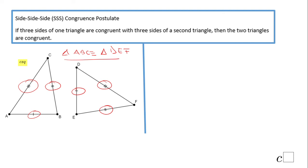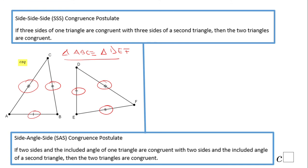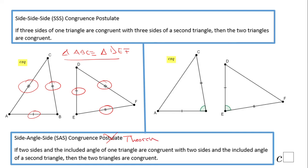Another way to prove congruence is what we call the Side-Angle-Side theorem. We have two pairs of corresponding congruent sides, and the angle included between those sides is also congruent. When the included angle is congruent, then the two triangles are congruent, and we can write the same type of congruence statement.